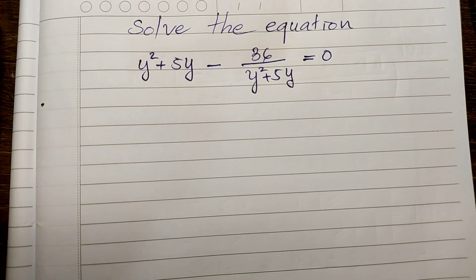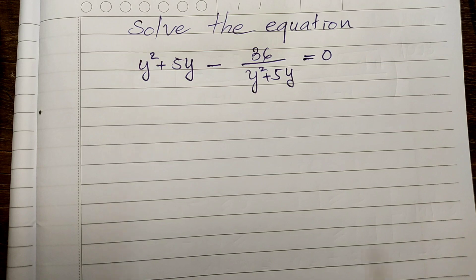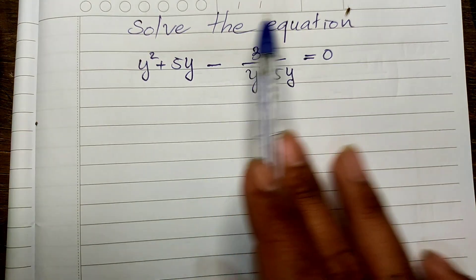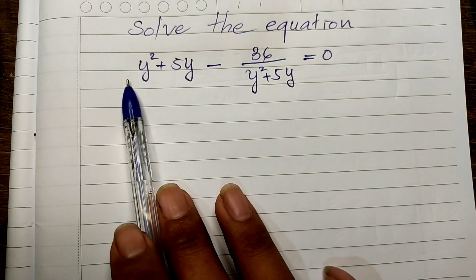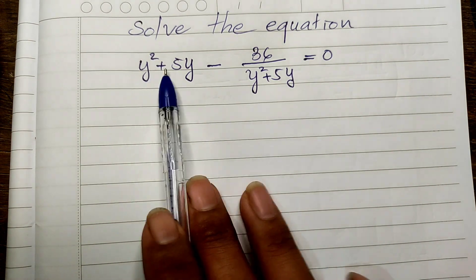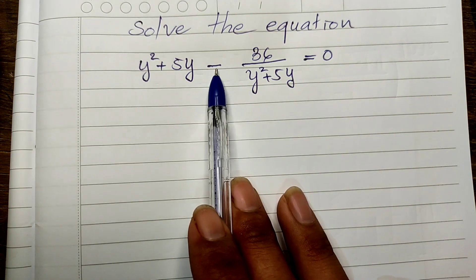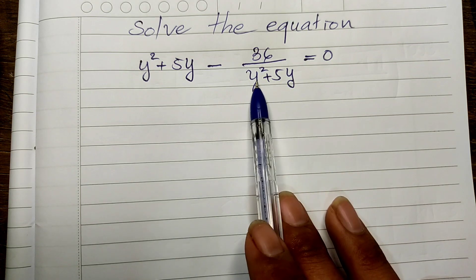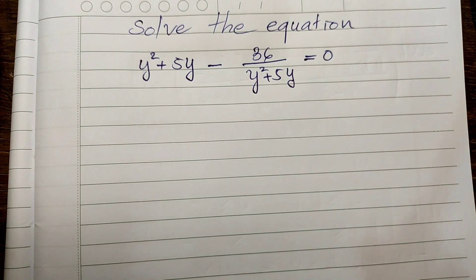Hello everyone, welcome to my YouTube channel. Today I hope you enjoy this exercise. We will solve this equation: y squared plus 5y minus 36, divided by y squared plus 5y, equals zero.